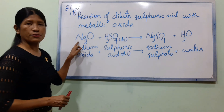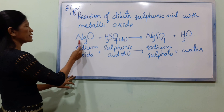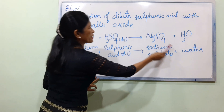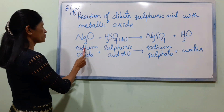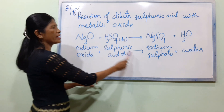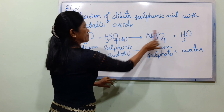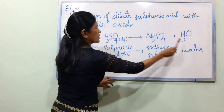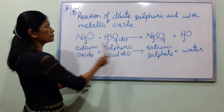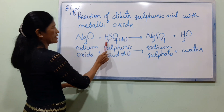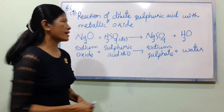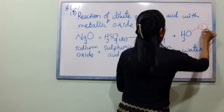The answer is: sodium oxide Na₂O plus sulfuric acid dilute H₂SO₄ gives sodium sulfate Na₂SO₄ plus water H₂O. The equation here is Na₂O plus H₂SO₄ gives Na₂SO₄ plus H₂O.